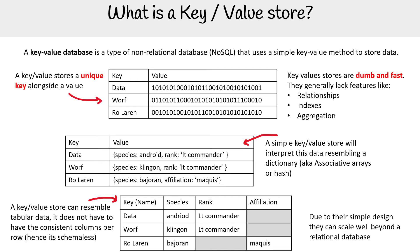Due to the simple design, they can scale well beyond a relational database, and key value stores are generally the most scalable. Because of their simplicity, they're really great for things like leaderboards where the data is stored exactly the way you want to see it. If you have to do joins or data manipulation, these are not going to be ideal. But if the data is exactly as you need to see it, they work really well.